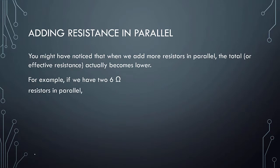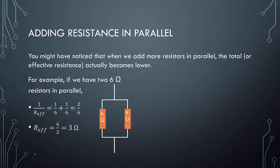For example, if we have two 6 ohm resistors in parallel, if you apply the formula, just 1 over 6 plus 1 over 6 equals 2 over 6. But that is 1 over R effective, so we need to flip it over, so it's 6 over 2, which is 3 ohms.